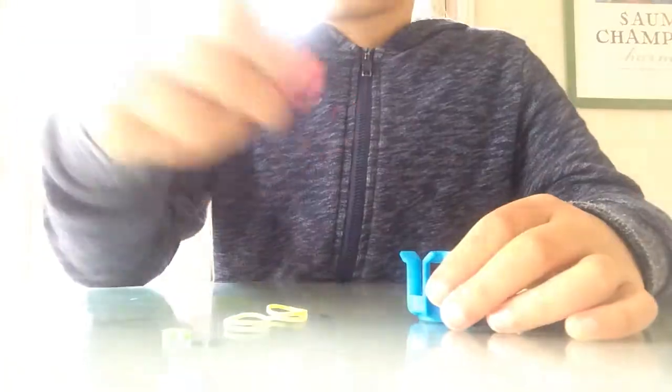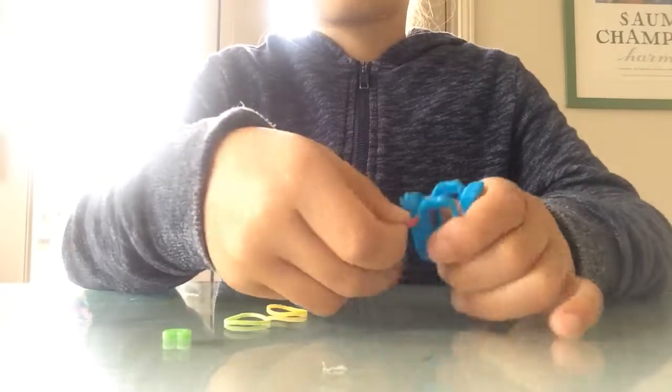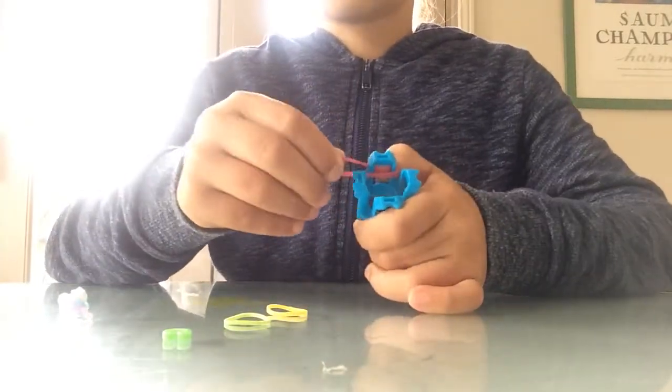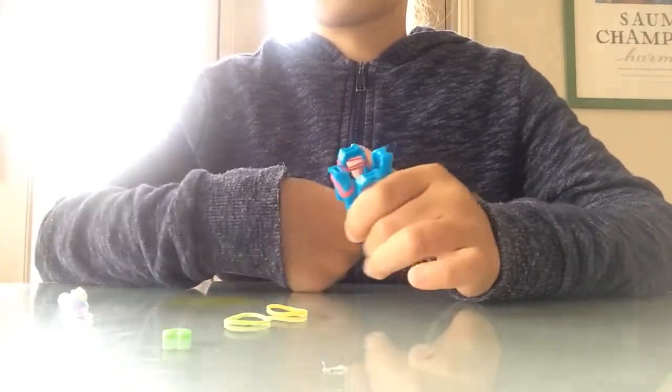First, take your two outside bands. For me it's red. Put them on like this and turn them like that.